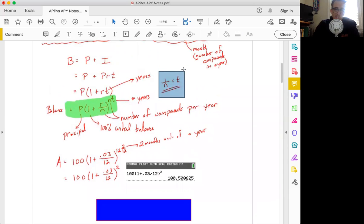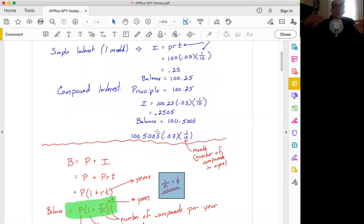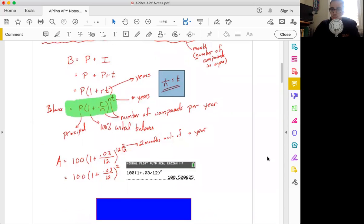So I don't know about you, but compound interest seems a little bit cleaner. It's just one equation we have to use versus simple interest, which just happens once, and then we have to do it again and again and again. Compound interest saves us some time. I hope that this video was helpful. If you have any questions, let me know. Thanks for watching.